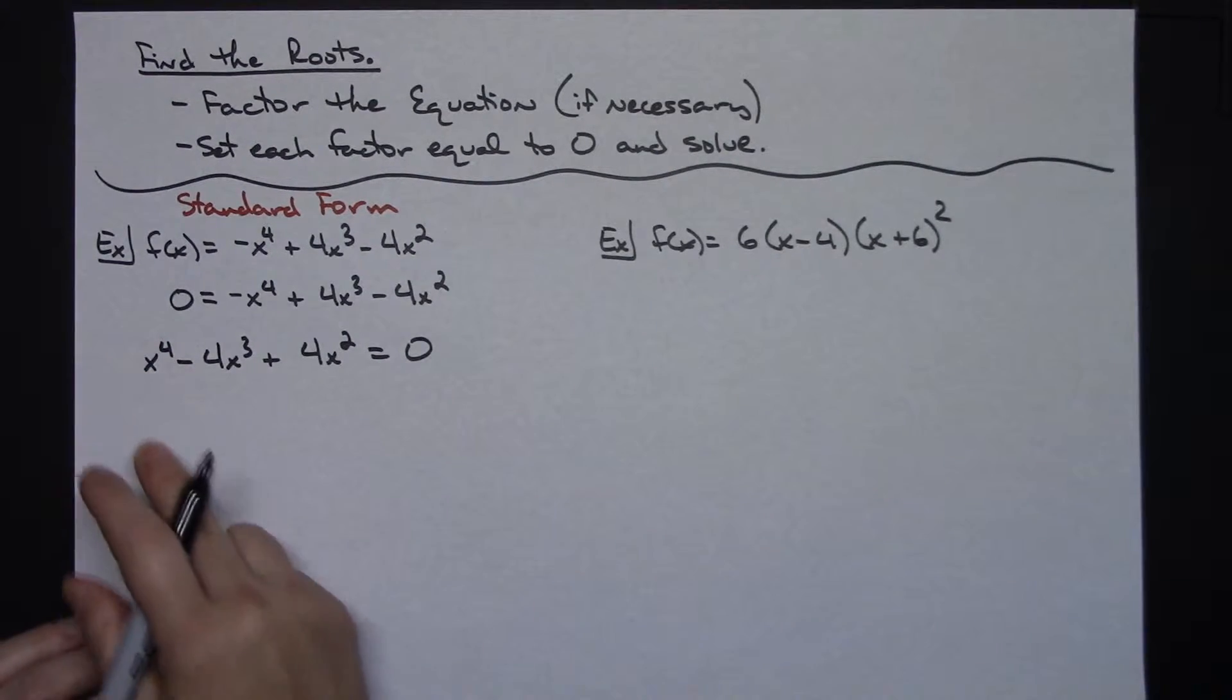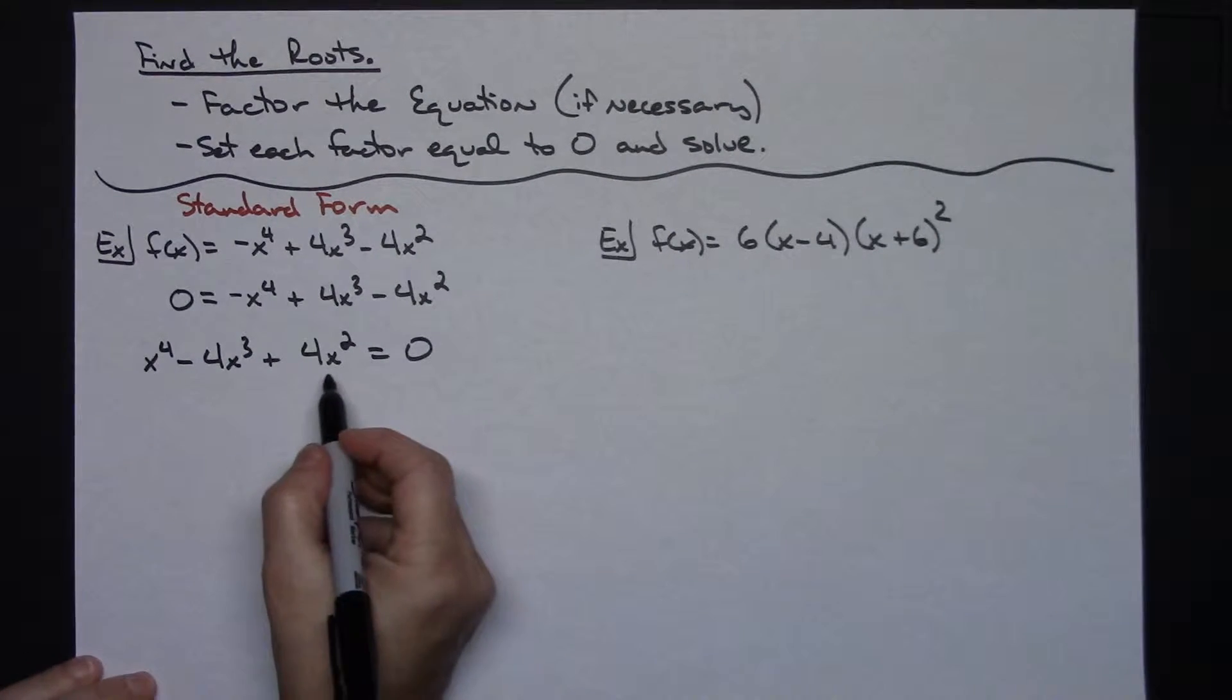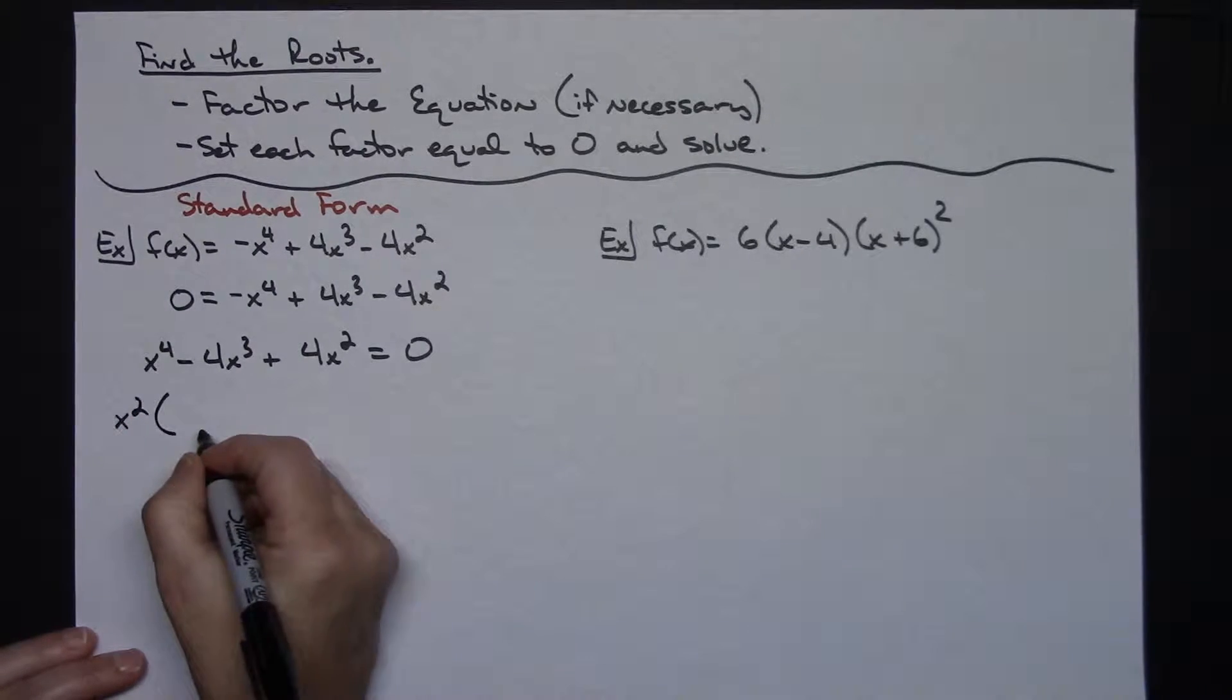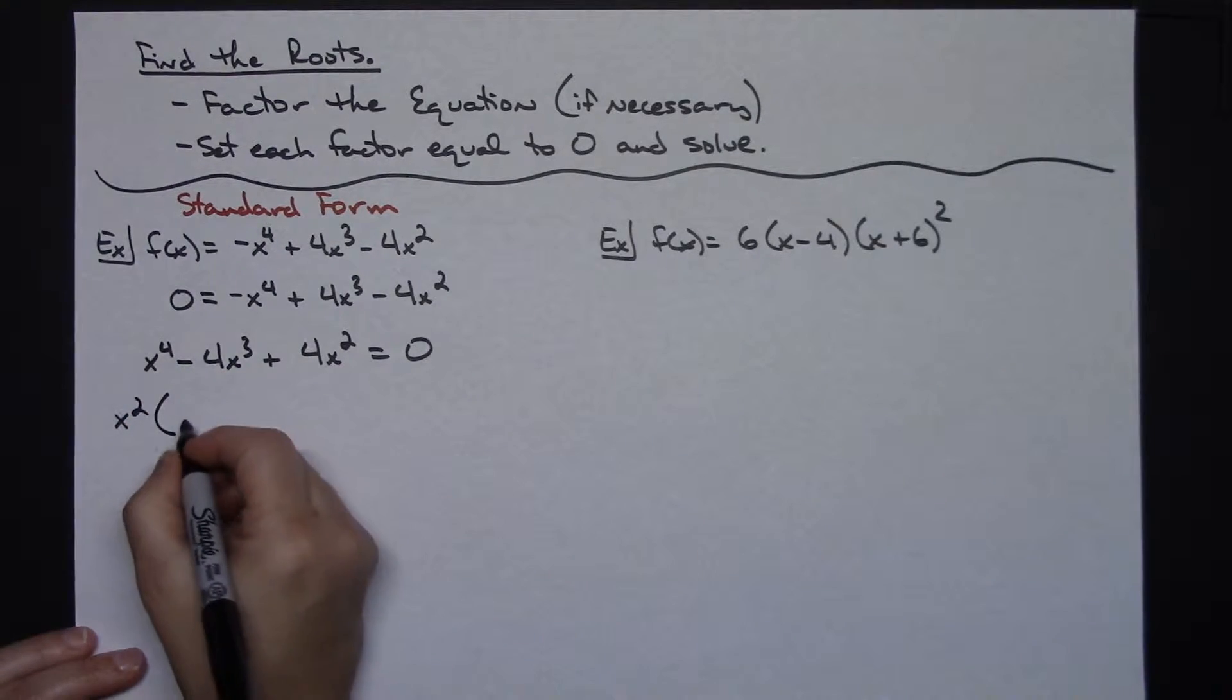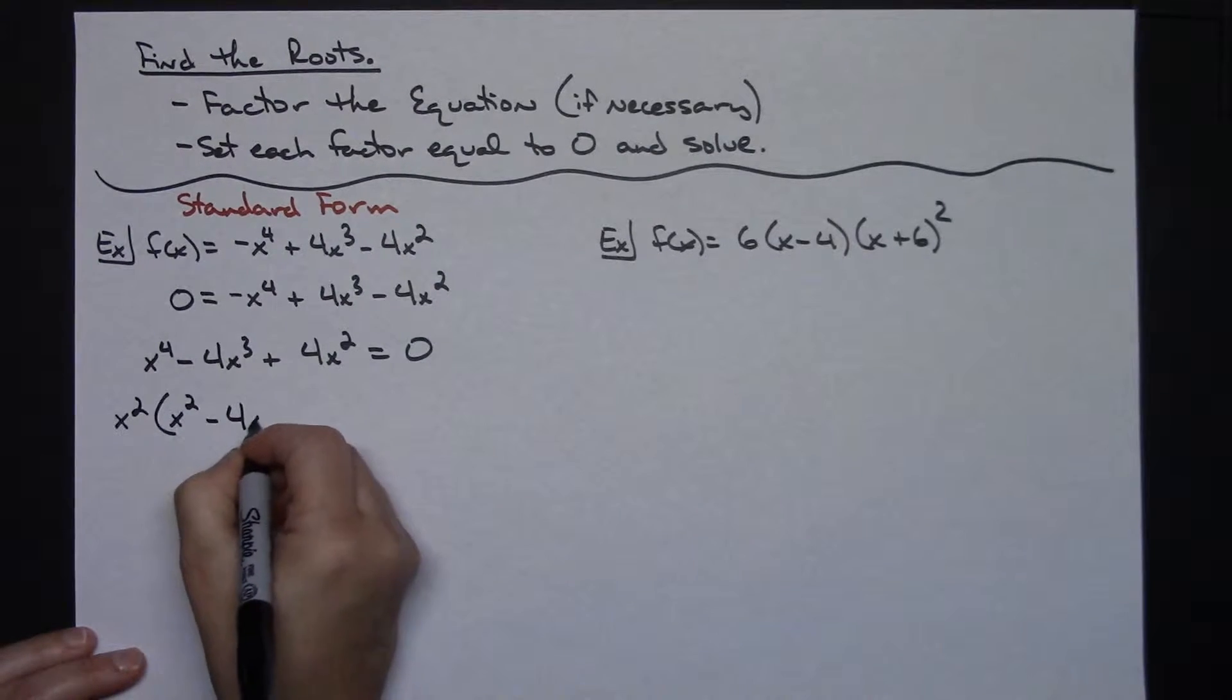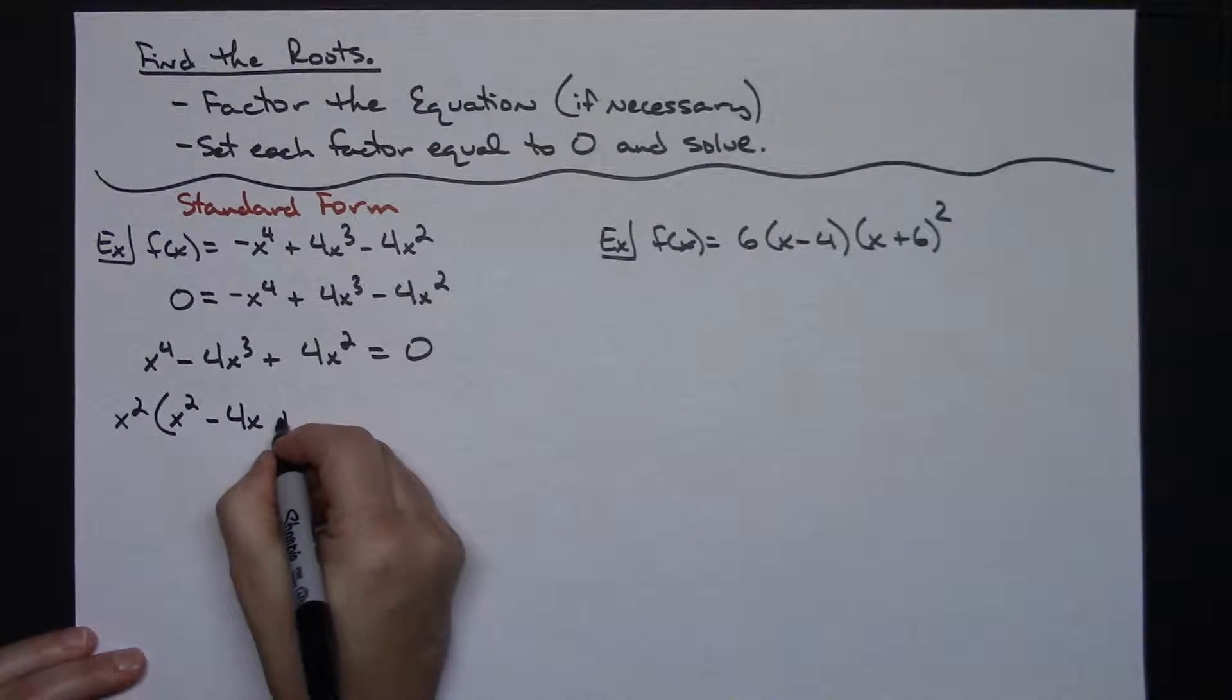I've got a leading coefficient that's positive so it's going to make my factoring really nice. I can take out a greatest common factor of x squared. I'm going to take that x squared out. That's going to leave me inside - that first term will have an x squared, middle term a minus 4x, and the last term just the positive 4.